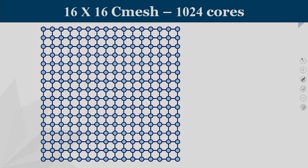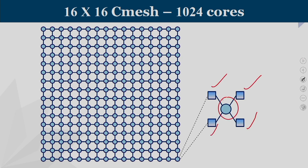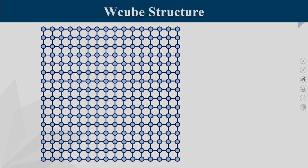Consider a 16×16 concentrated mesh, also called a C-mesh. In a concentrated mesh you have 16×16 = 256 points, and each node has a concentration of 4, meaning each is connected to 4 processing units. So we have 256 routers but a total of 1024 cores — that is called a concentrated mesh connection.